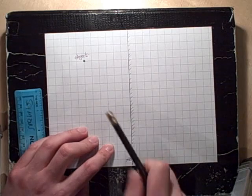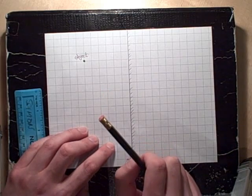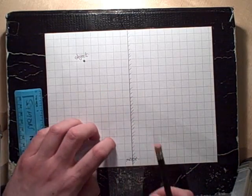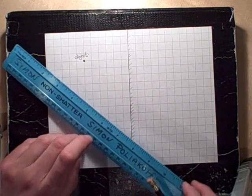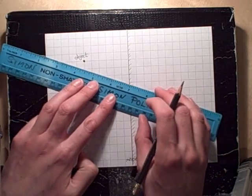So, light starts off at the object, and then it hits the mirror and gets reflected.